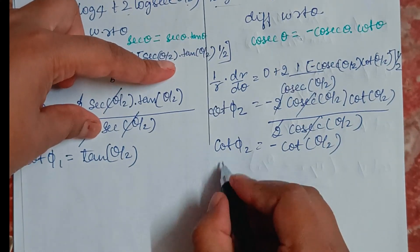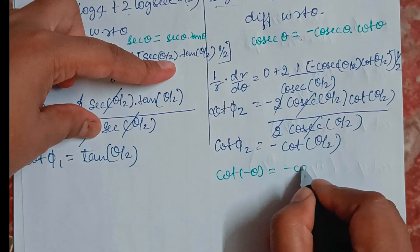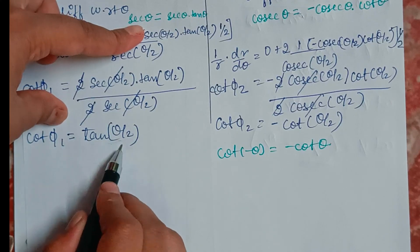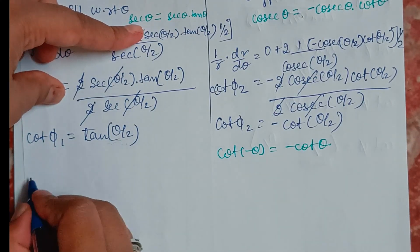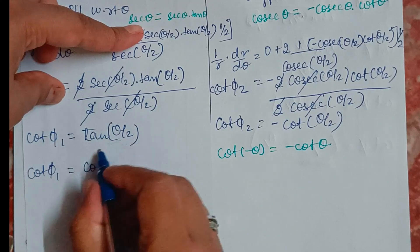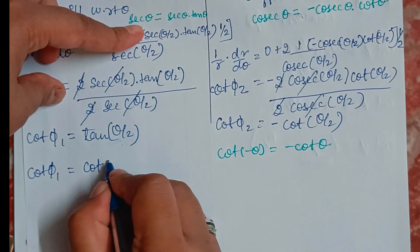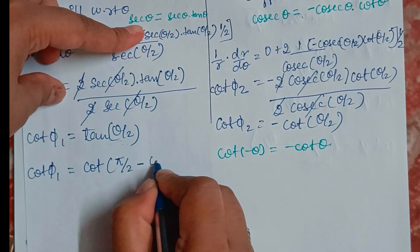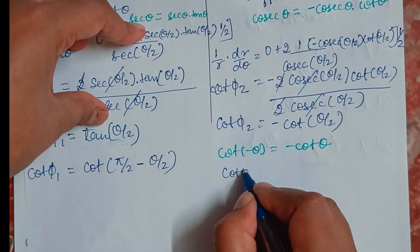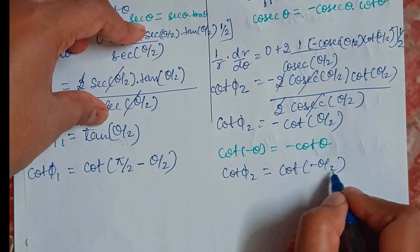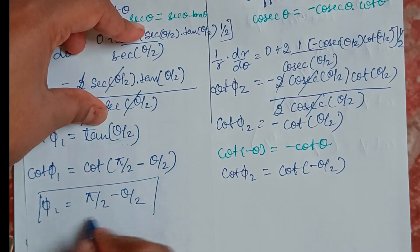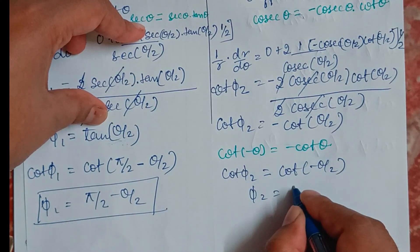We know cot(−θ) = −cot θ. Writing cot φ₁ = tan(θ/2) in terms of cot: tan(θ/2) = cot(π/2 − θ/2), so φ₁ = π/2 − θ/2. For the second curve, cot φ₂ = −cot(θ/2), so φ₂ = −θ/2.